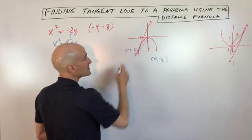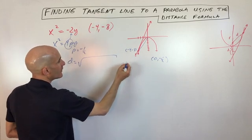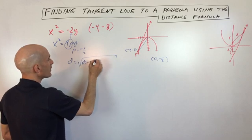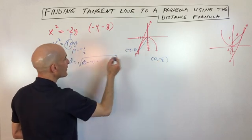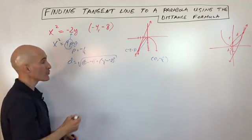So let's go ahead and do that. So we have the distance equals the square root of zero minus negative 4 squared plus negative 1 half minus negative 8 squared. Add those together and take the square root.